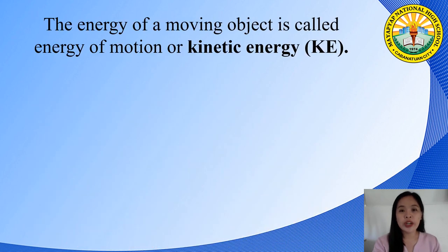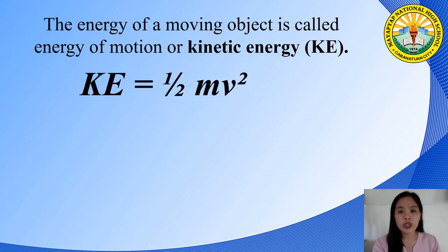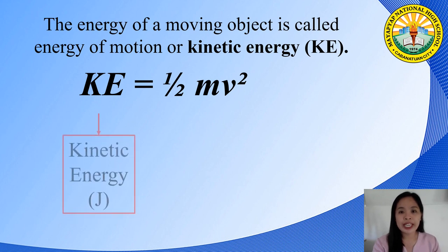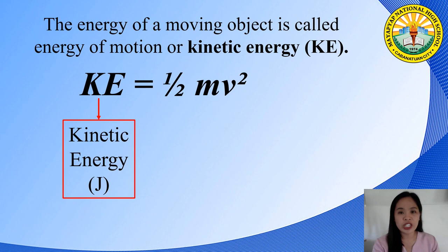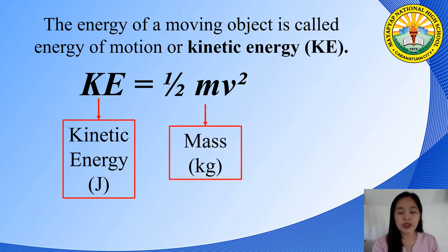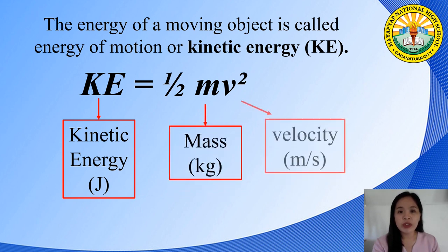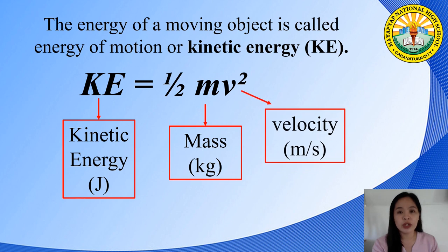For this session, we are going to discuss two types of energy: kinetic energy and potential energy. The energy of a moving object is called energy of motion, or kinetic energy. To determine the kinetic energy of any object, we use the equation KE = ½mv², where KE stands for kinetic energy (unit: Joule), m for mass (unit: kilogram), and v for velocity (unit: meter per second). The factors that may affect the kinetic energy of an object are mass and velocity.